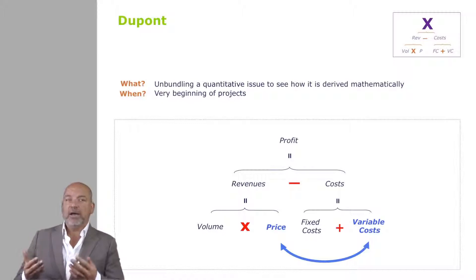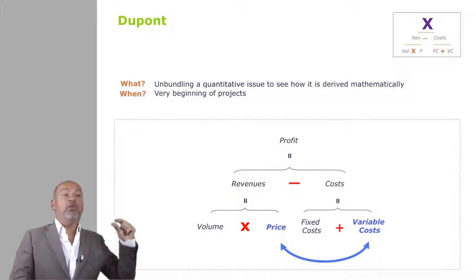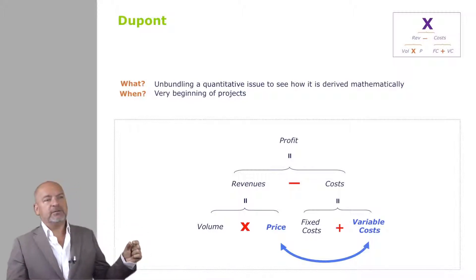Which means if you don't sell anything, you don't lose anything. However, the moment you sell one item, you incur variable costs. And therefore, the price at which you sell that item is really essential to you. So variable costs moves together with price.